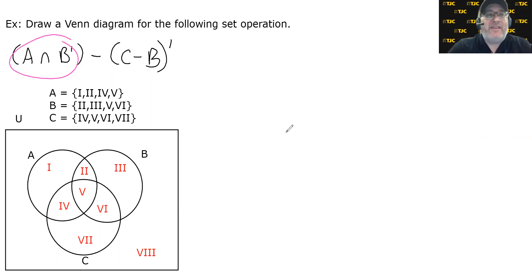I know I'm going to take one thing and remove something else. So let's start with the thing I'm going to begin with. A intersect B complement. So I want to know what's inside of A and outside of B. Which regions are inside of A and outside of B? That would be these two regions. Inside of A and outside of B. And from that, I'm going to subtract the complement of C minus B.